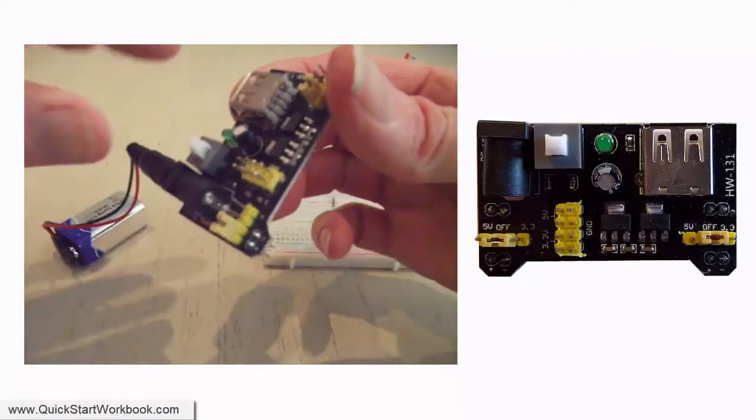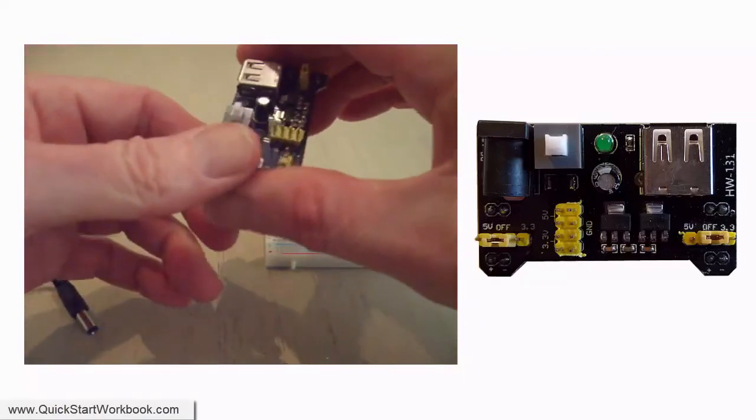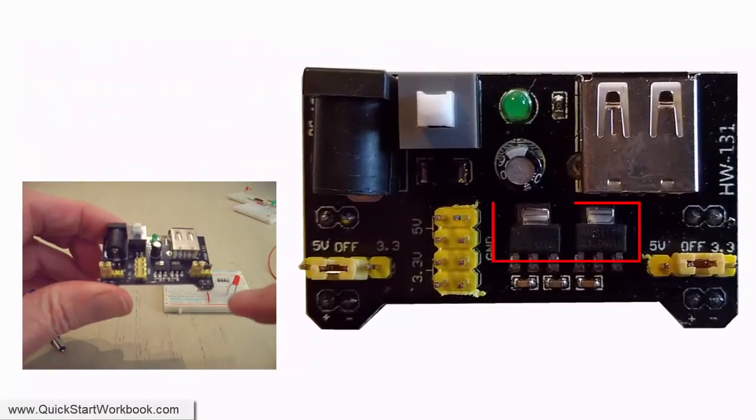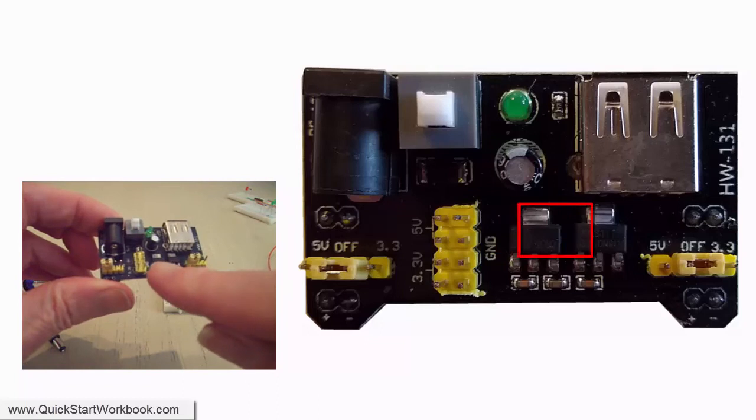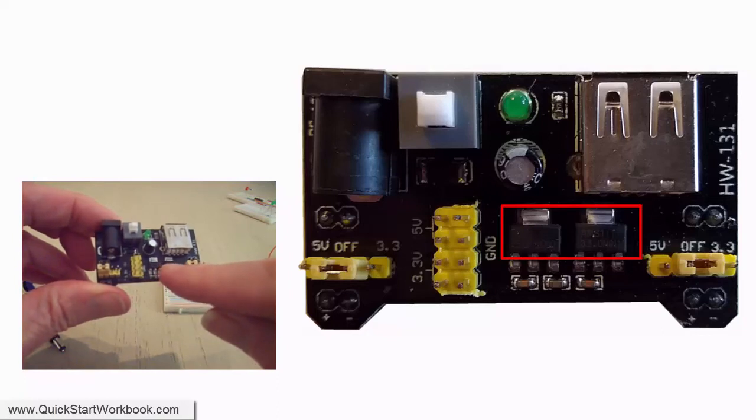Let's take a quick look at the other main components on the module. As I mentioned at the beginning of the video, there are two voltage regulators on the board. One is a 5 volt regulator, which is the one on the left, and the other is for 3.3 volts. A voltage regulator is a system designed to automatically maintain a constant voltage.